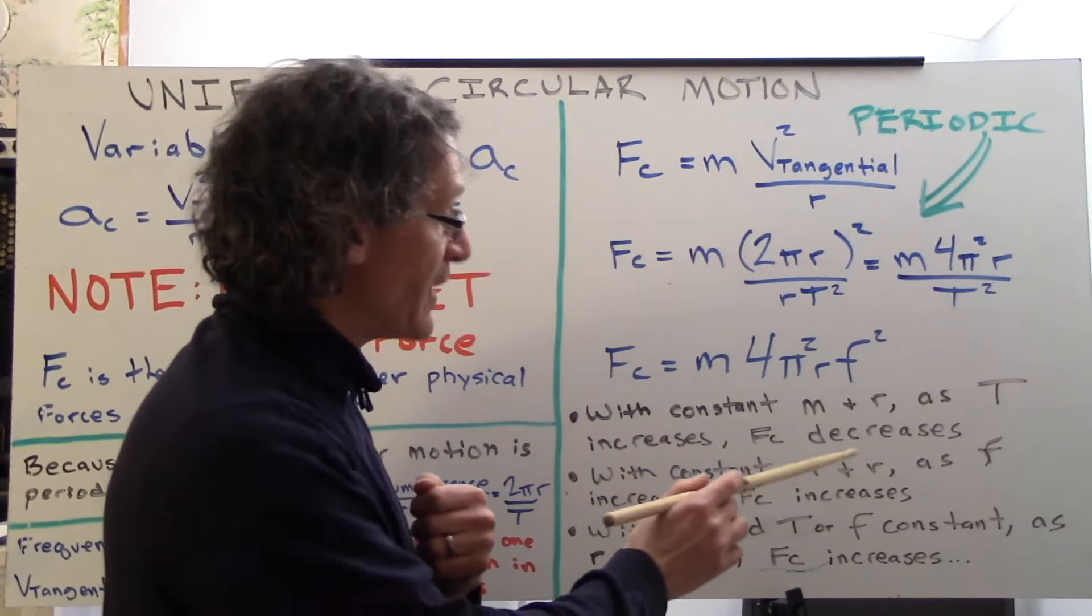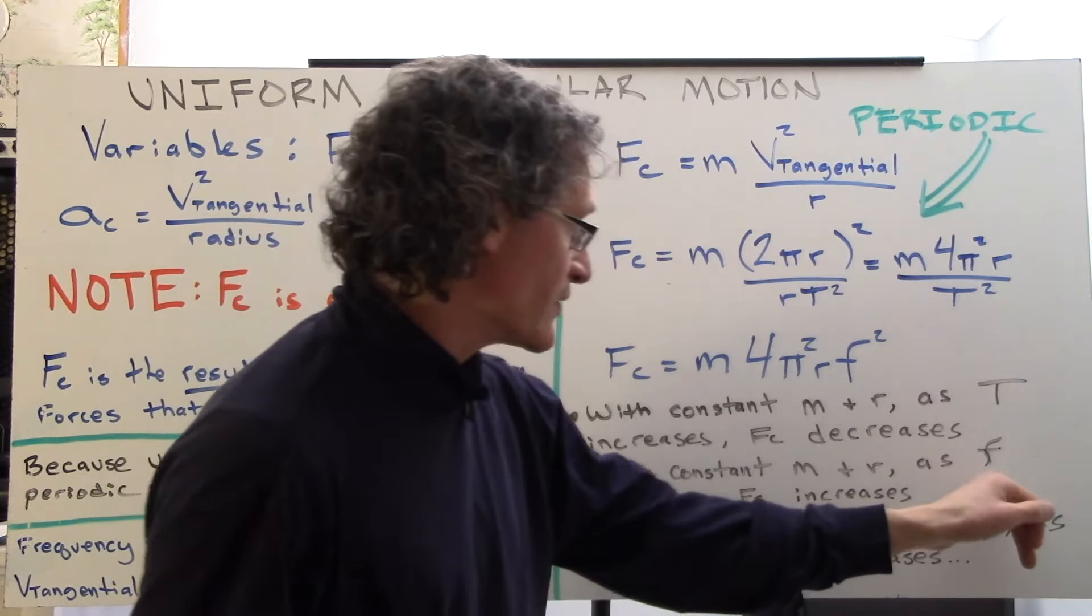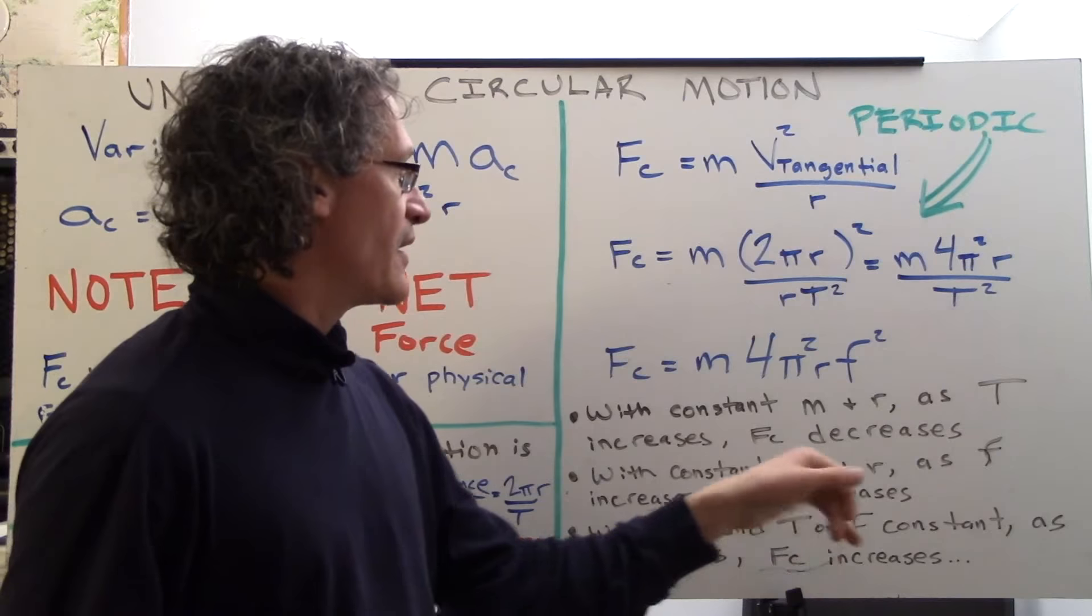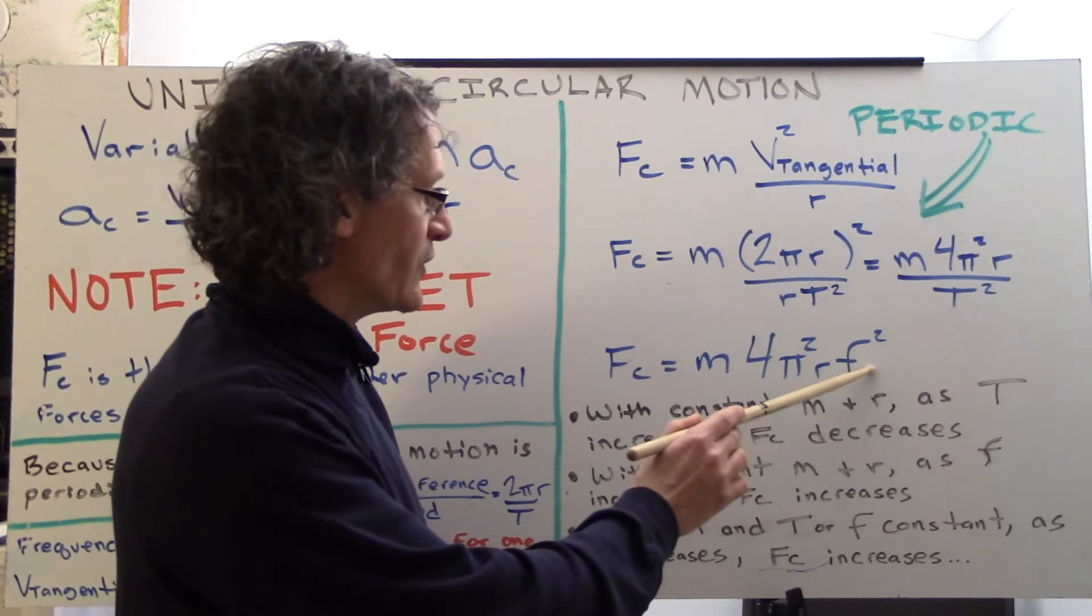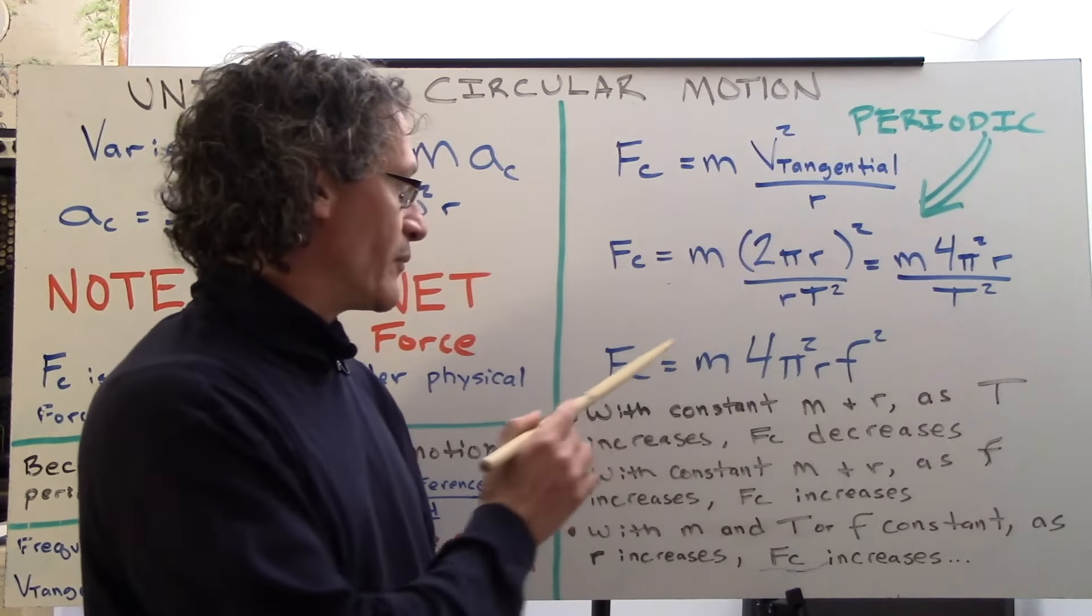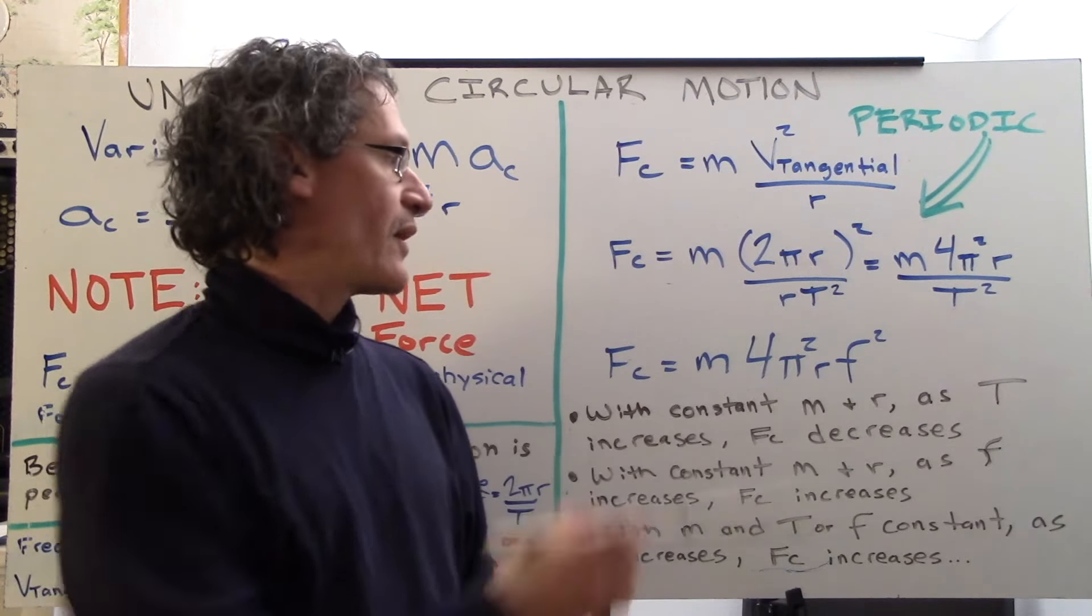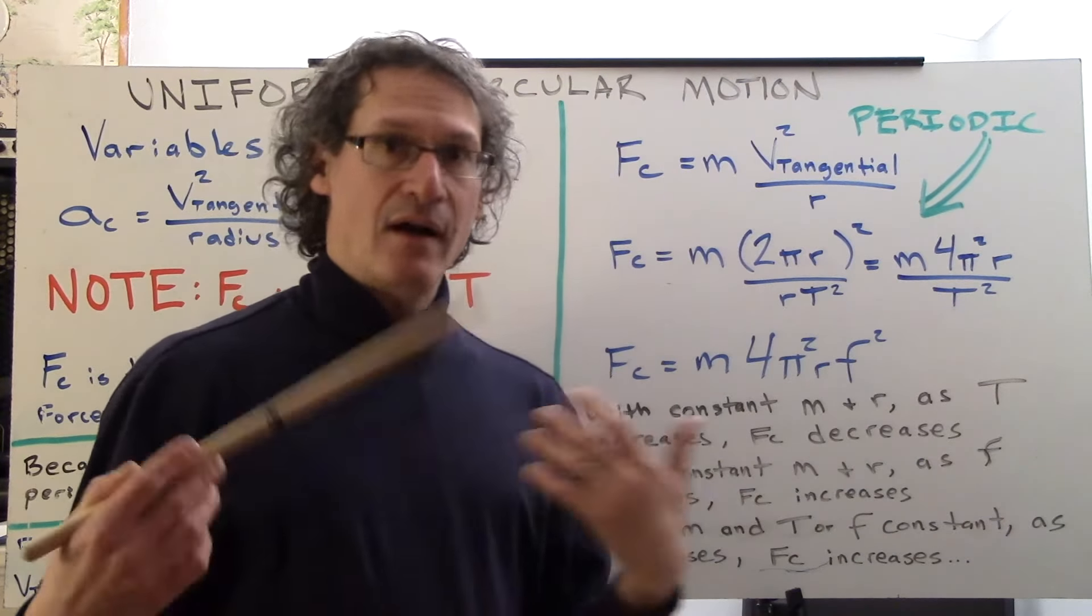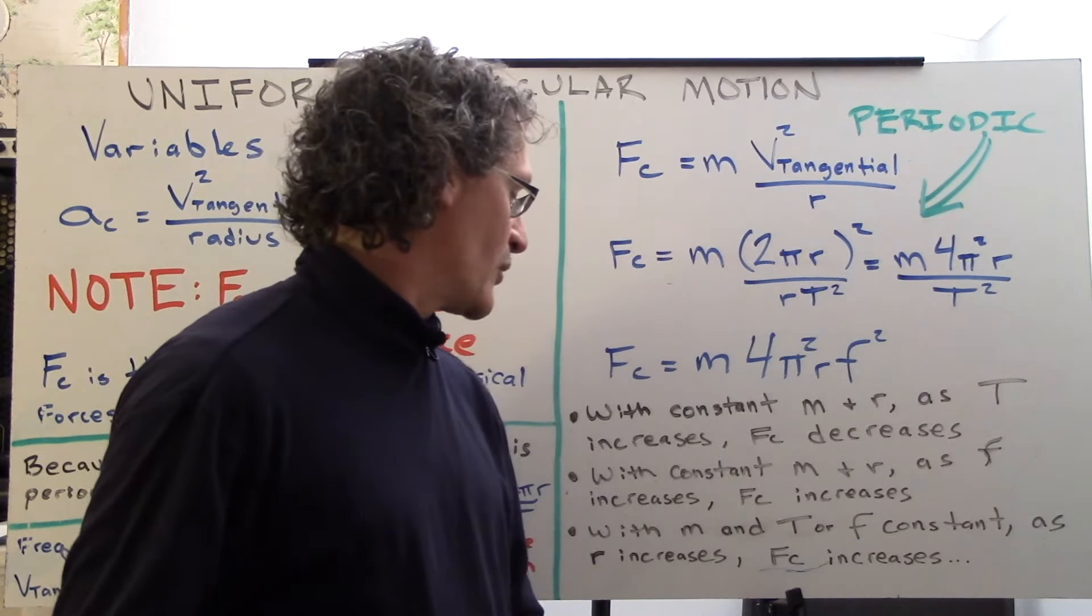With constant mass and radius as frequency, this is as curvy f as frequency, increases then Fc increases. Well, we can see that here certainly that it's not only proportional to f, it's proportional f². So it really goes up as frequency goes up. So as frequency rises, so does force centripetal.